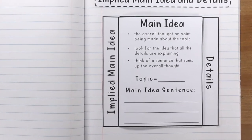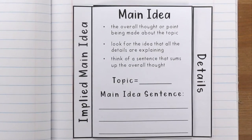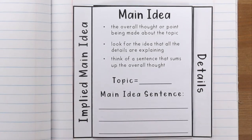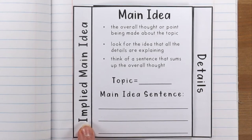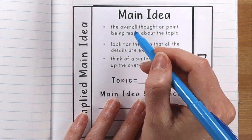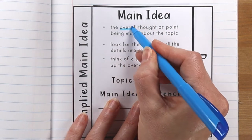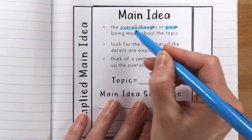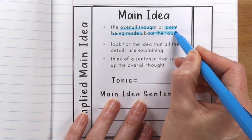We are ready to talk about main idea. If you saw my other lesson on main idea, it was about the stated main idea — a main idea that was going to be stated in the paragraph. This is implied, which just means that they're telling you enough information so that you can figure out the main idea for yourself, but there isn't an exact sentence that states the main idea. And we know that it is going to be the overall thought or point being made about the topic.